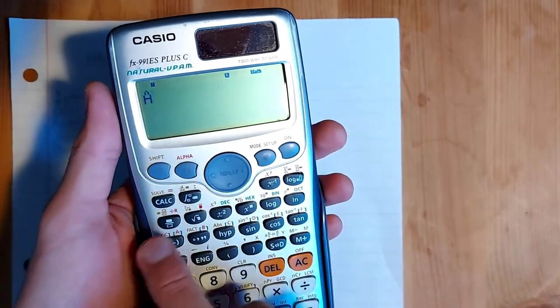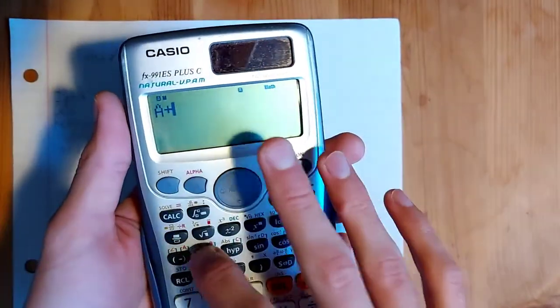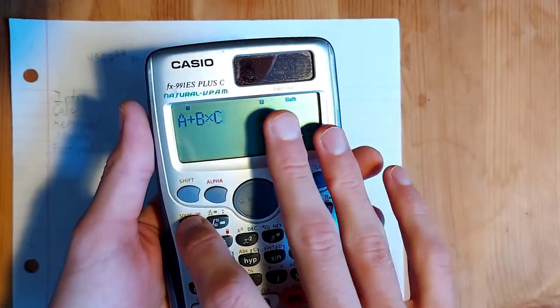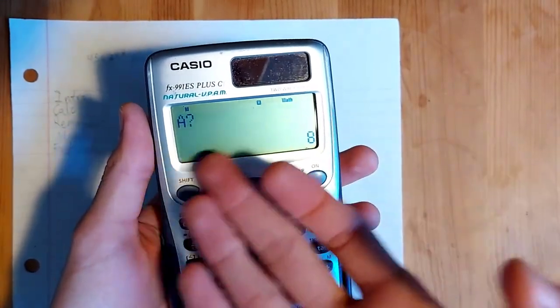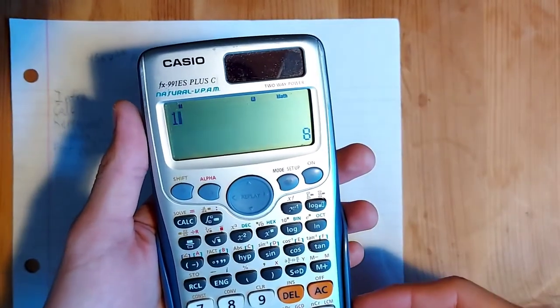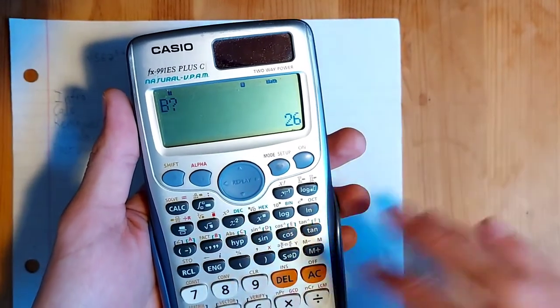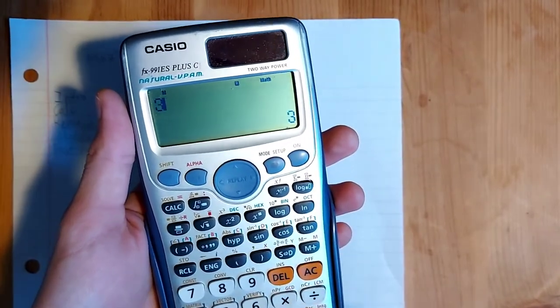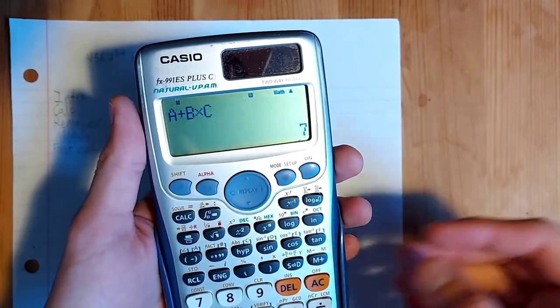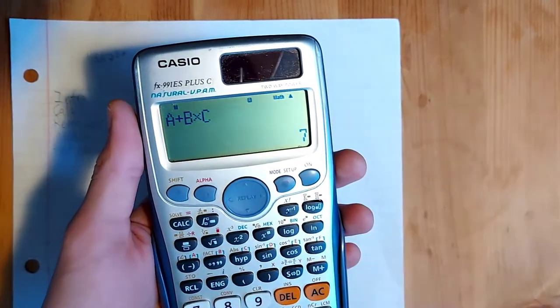So let's begin with a quick example. I'm going to hit alpha a, and that'll put the a character on screen. And then I can do plus b times c. So we have a plus b times c. And let's enter in some values. I've pressed the calc button, so it'll ask me what I want to put in for a. Let's just put one. Let's do one plus two times three, which should evaluate to seven. So we put in one for a, two for b, and three for c. And we can see that it prints out seven.